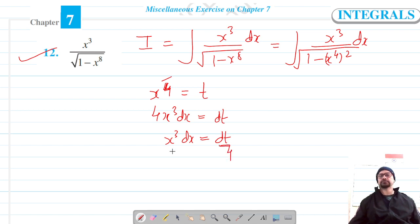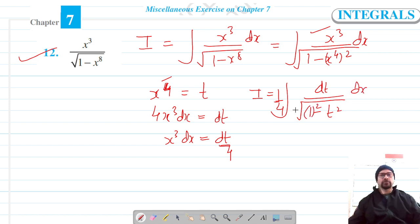Now if my integral is x cubed dx equals dt, 1 by 4 can be taken out and it's integration of 1 over square root of 1 minus t squared dx, which I can write as 1 squared minus t squared.